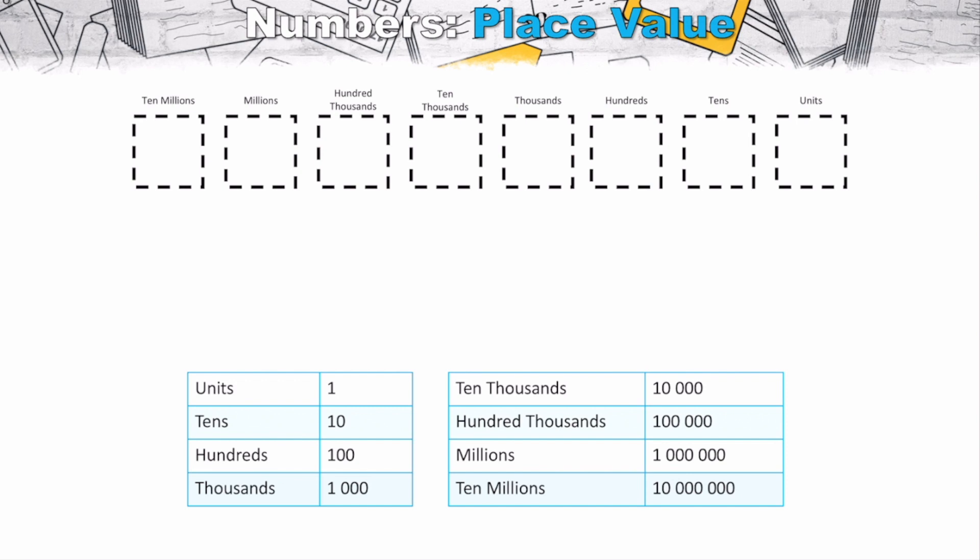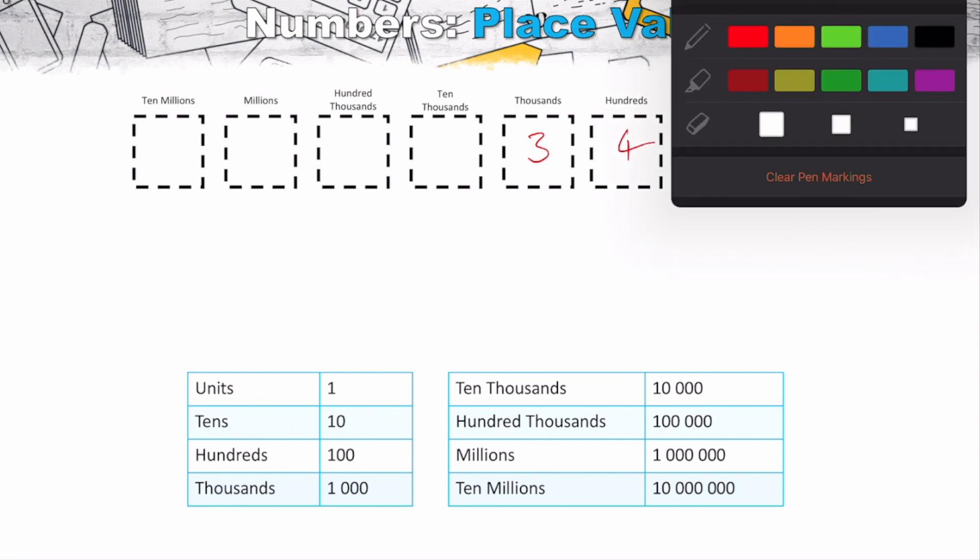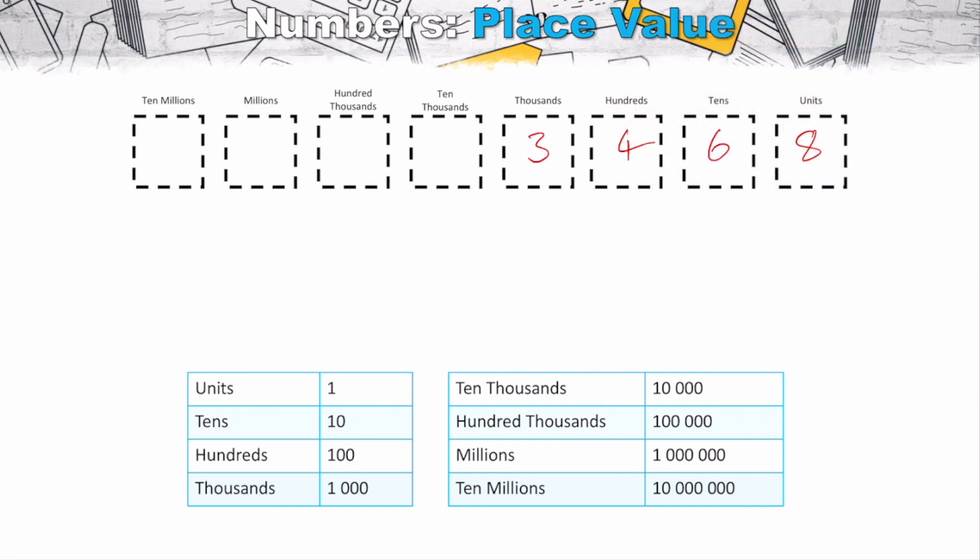Now to really be able to do this, we need to first take a look at place value and what place value represents when we work with numbers. I'm hoping that you've got some experience with place value before, but essentially when we have a number, so let's just say I've got the number 3,468, all right? Each one of these digits represents something unique and something specific to the number.